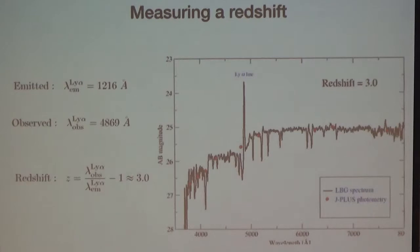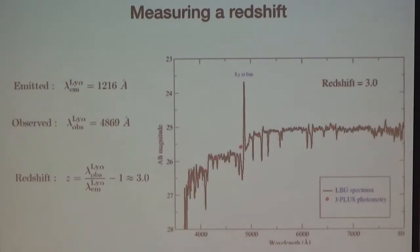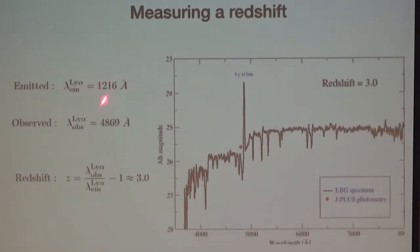Here I'm using a spectrum of a distant galaxy. There are all kinds of emission and absorption features, but one emission feature which is very prominent is the Lyman alpha emission line. We know it from context because these galaxies are surrounded by neutral gas, which is excited by radiation from the galaxy, and the neutral hydrogen emits photons in the Lyman alpha line. The Lyman alpha transition is measured to have a wavelength of 1216 Ångströms in the lab, while here the observed wavelength is close to 5000 Ångströms. From this, you infer that the object has a redshift of approximately 3.